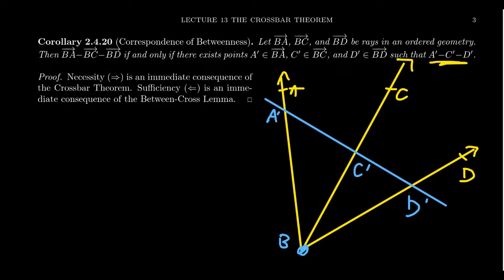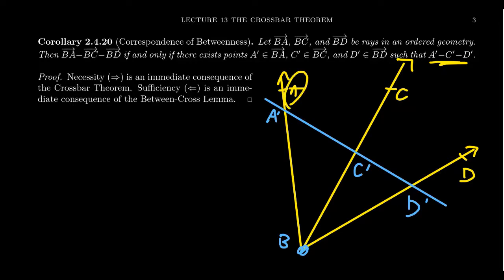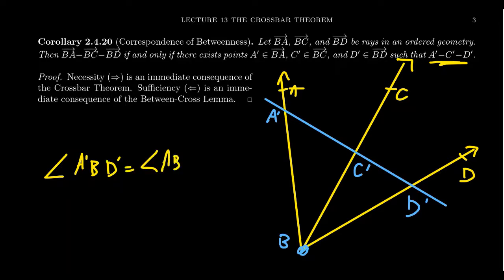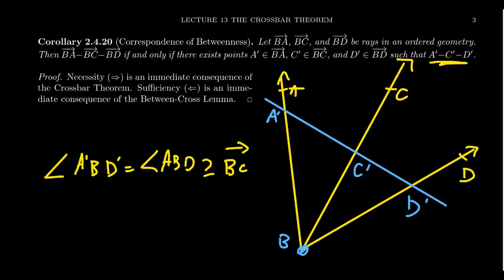By the between-cross lemma, because C' is between A' and D', that means C' is an interior point to the angle A'BD'. But since ray BA' is the same ray as BA, and ray BD' is the same as ray BD, the angle A'BD' equals angle ABD. In particular, C' belongs to the angle ABD. So the entire ray BC' lives inside that angle, as previously shown. But that's the same as ray BC. Therefore BC is between BA and BD, because C is an interior point. Sufficiency is essentially an immediate consequence of the between-cross lemma.